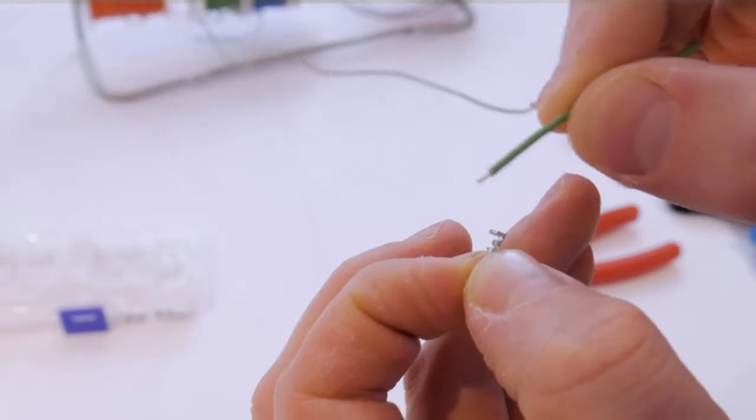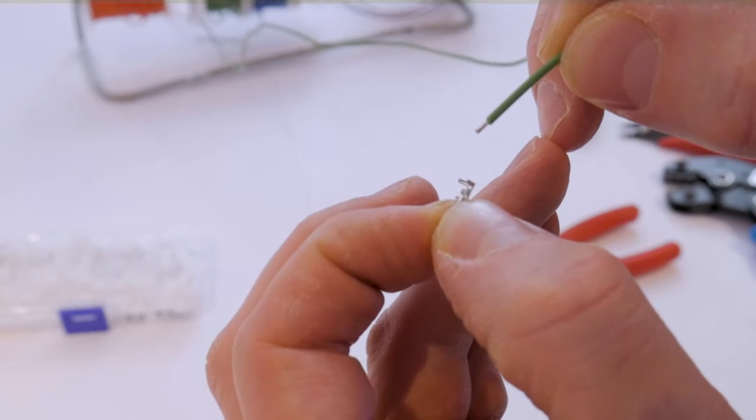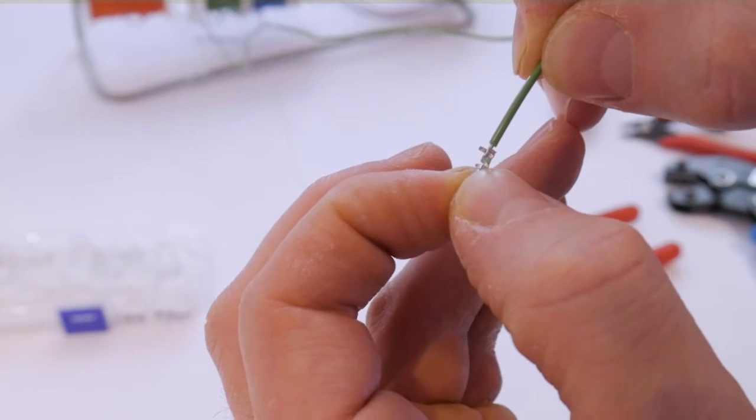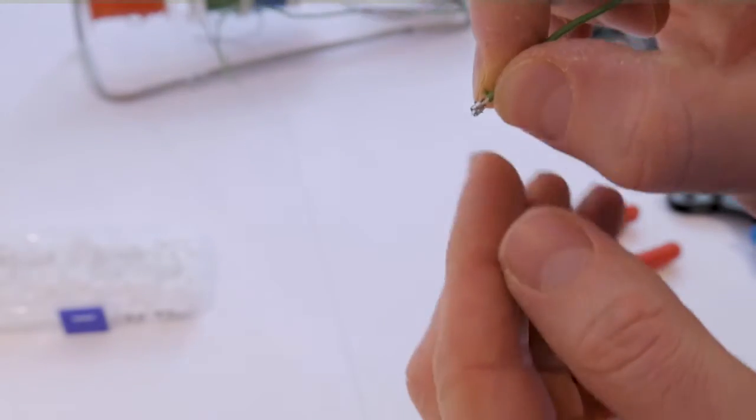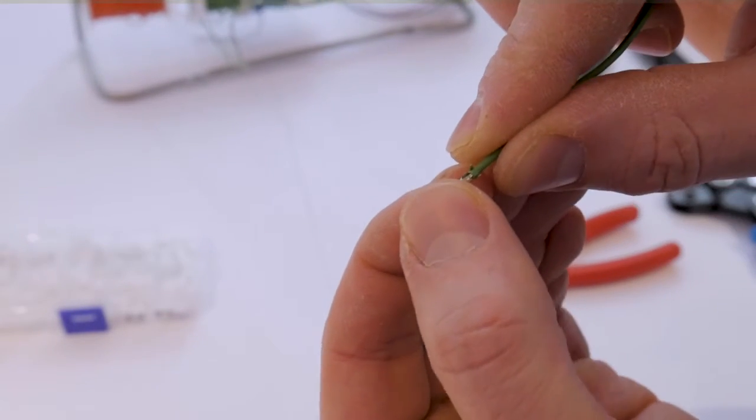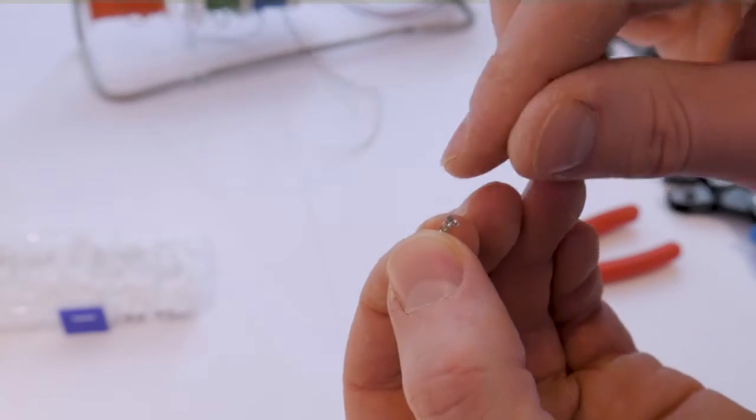So I've gone ahead and I've prepped a piece of wire here, so I've stripped that down, and the idea being that you just insert it like this. And I'm first going to use the ratcheting style crimpers and we're going to give that a go and see how it turns out.